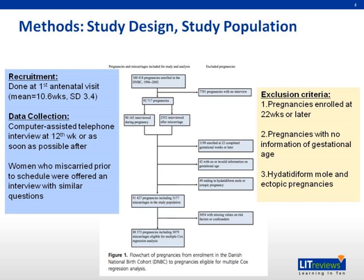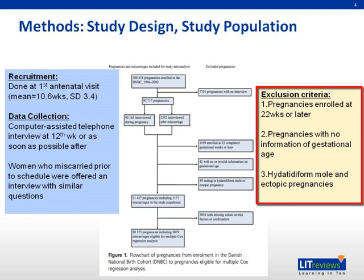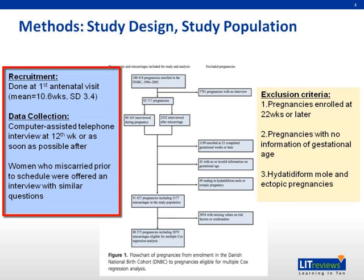Methods. All pregnancies registered in the Danish National Birth Cohort were included. However, there are some exclusion criteria such as pregnancies ending at 20 weeks or later, pregnancies with no information on gestational age, hydatidiform mole, and ectopic pregnancies. Women were recruited at their first antenatal visit at the general practitioner, presenting at a mean gestational age of 10.6 weeks. Following informed consent and permission from the Danish Data Protection Board and the Scientific Ethics Committee, a computer-assisted telephone interview was carried out at 12 weeks of gestation, or as soon as possible after that. Women who miscarried prior to the schedule were offered an interview with similar questions.